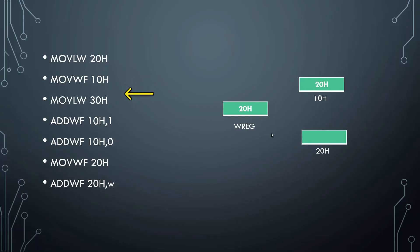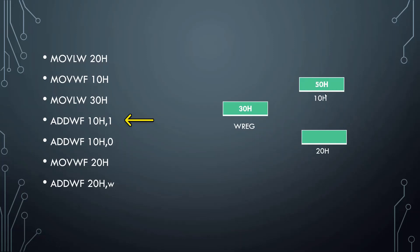MOVLW 30h — the working register now contains the value 30h. ADDWF 10h, 1: this instruction adds the value present in WREG (30h) and the value in the file register at address 10h (20h). 'w' stands for WREG and 'f' stands for the file register at 10h. The result is 50h. Since d is 1, the result gets stored in the file register at address 10h, so 10h now gets the value 50h.